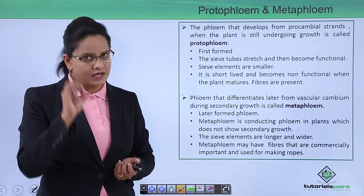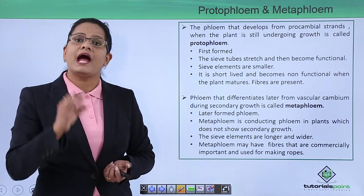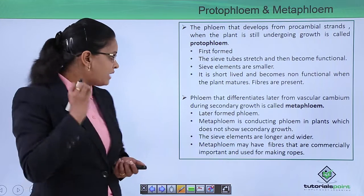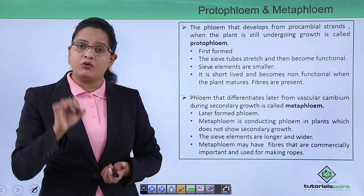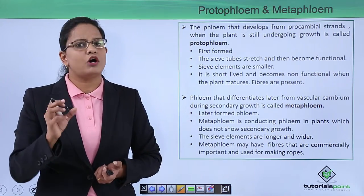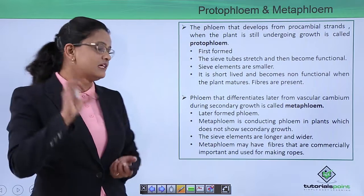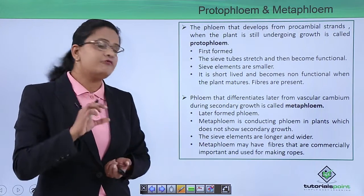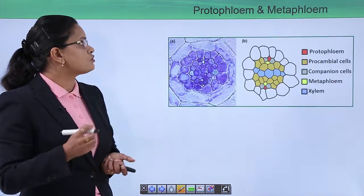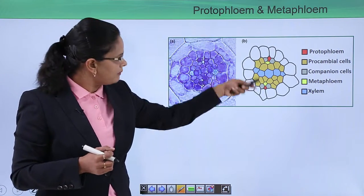Meta phloem develops from vascular cambium and is the later-formed phloem. Here, sieve cells are comparatively bigger in size. Meta phloem is generally not found in plants showing secondary growth. In monocots, meta phloem is the main conducting tissue and proto phloem gets crushed. The sieve elements in meta phloem are longer and wider, and meta phloem may or may not have fibers.